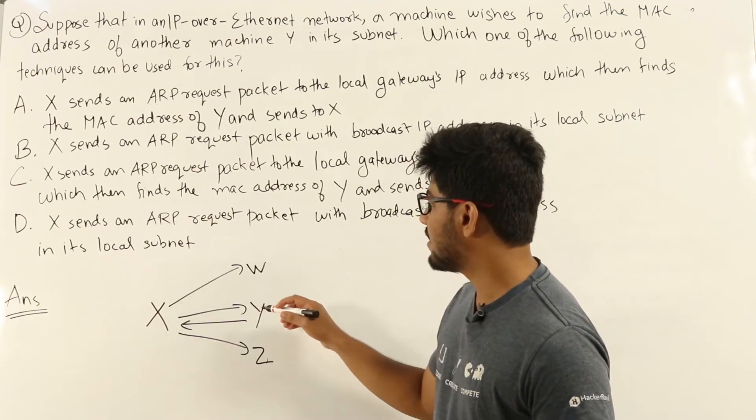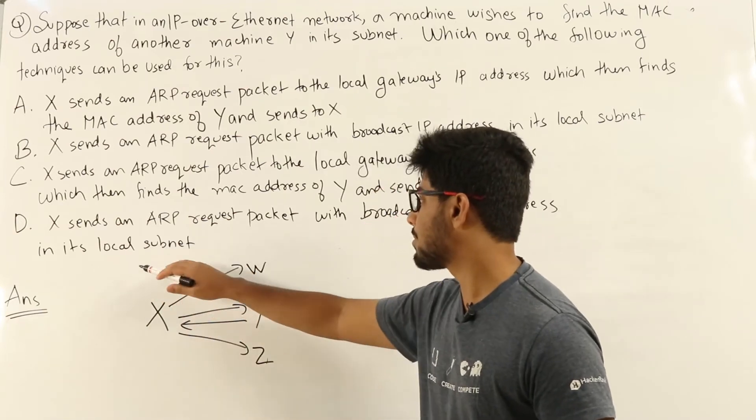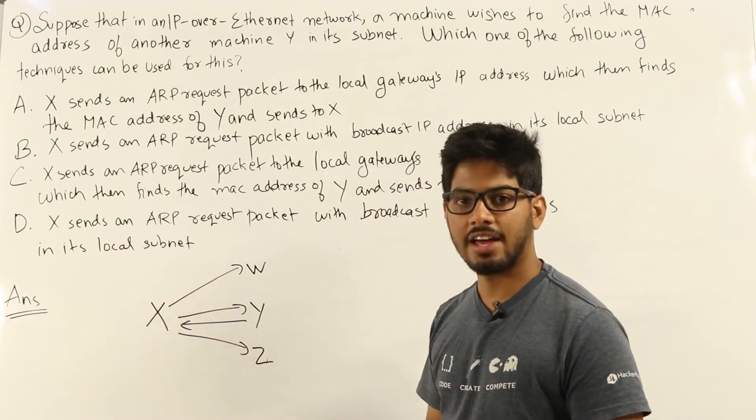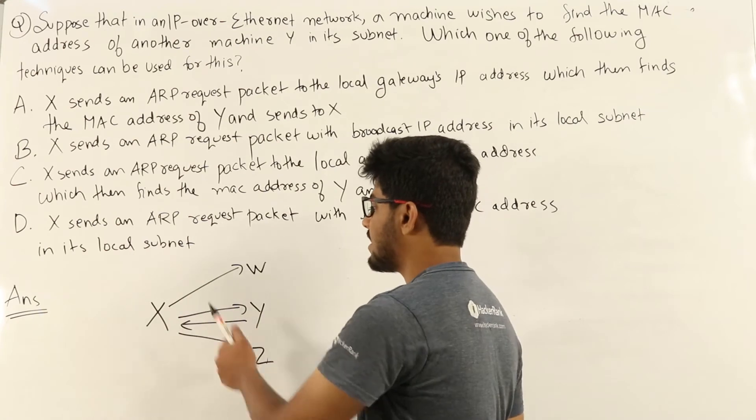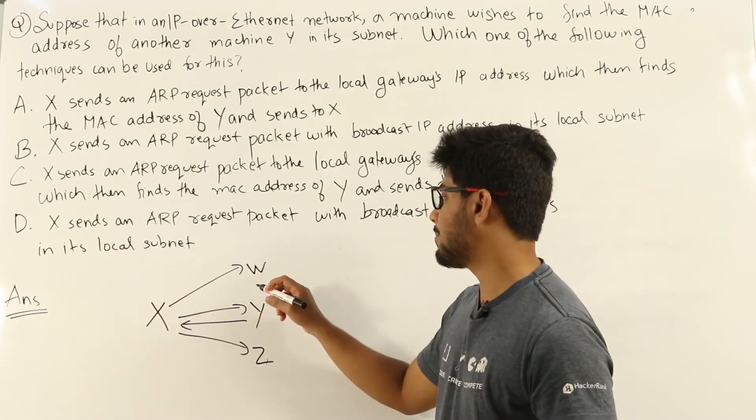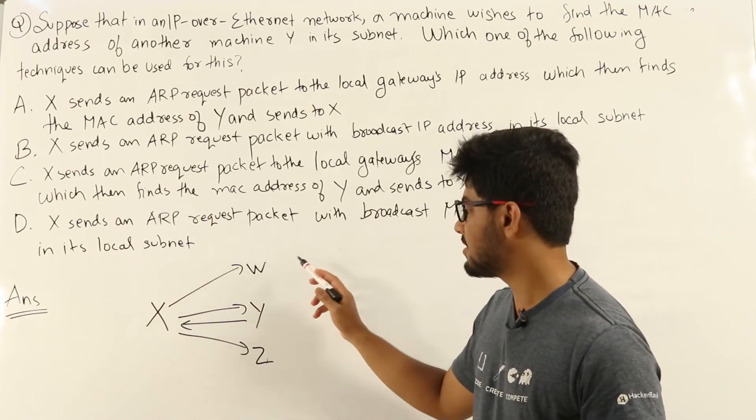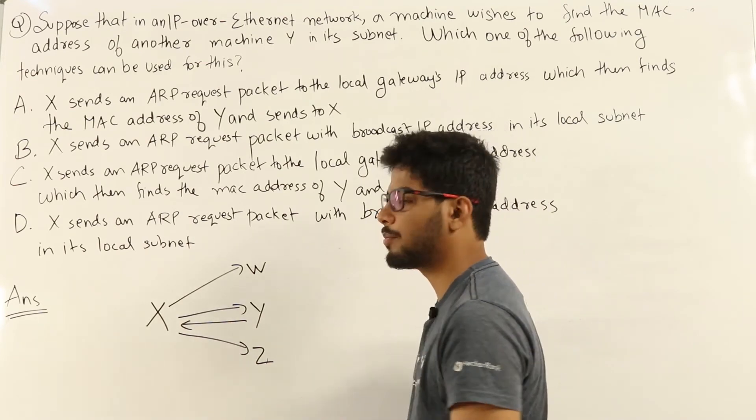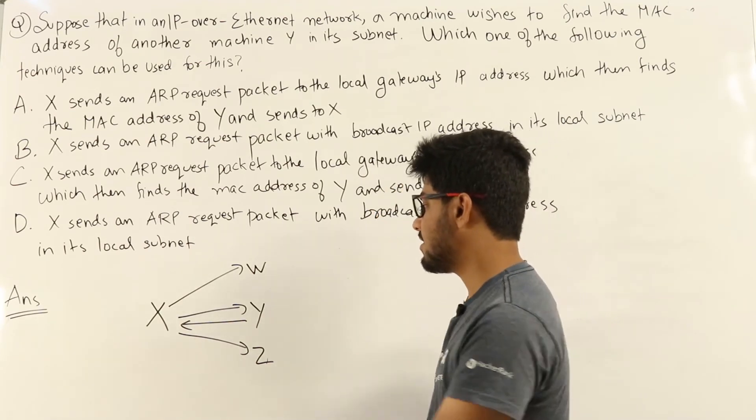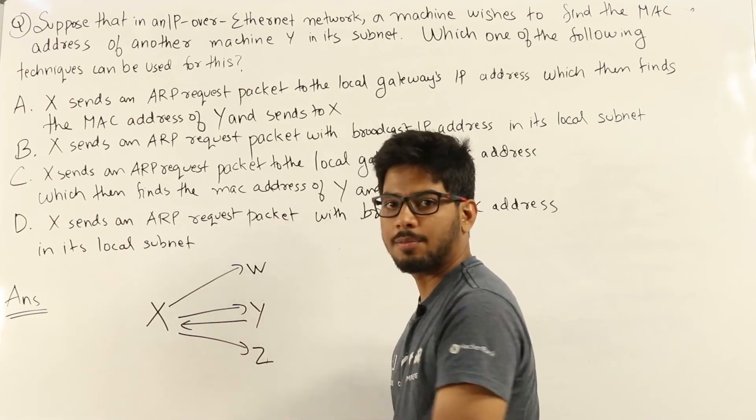Now, in that it is saying who has the MAC address corresponding to this particular IP address. That's what X is asking. Now, W will look at the IP address and see it is not its IP address. Z also will see and it will see that it is not its IP address. Only Y will see that X is asking about Y's IP address.